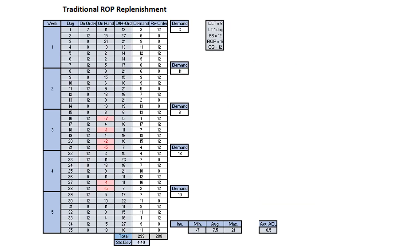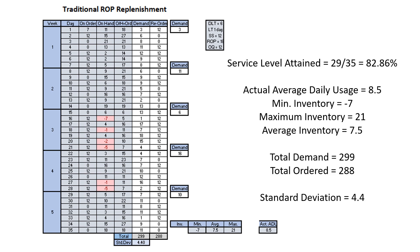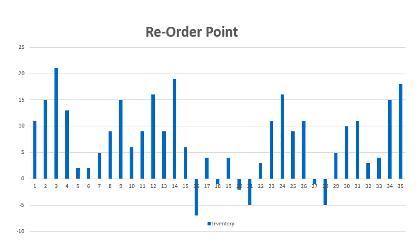Here are the complete reorder point results for the 35 days. You can see we had 6 out of the 35 days where we had negative inventory and let customers down with insufficient stock. This gives us a customer service level of just over 82%, considerably less than the 98% required. Over the 35 days, we had a demand of 299, giving us an average daily usage of 8.5. Our minimum inventory was minus 7 and a maximum of 21, with an average of 7.5. The standard deviation was 4.4, less than the 5 we used to calculate our safety stock, so we should have done better than anticipated. Here we see the inventory level at the end of each day using the reorder point system, showing the 6 days on which we had insufficient stock.